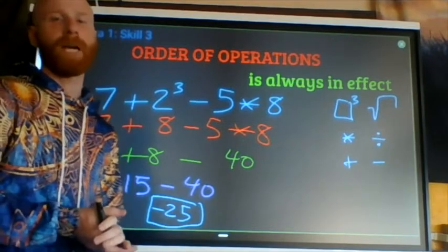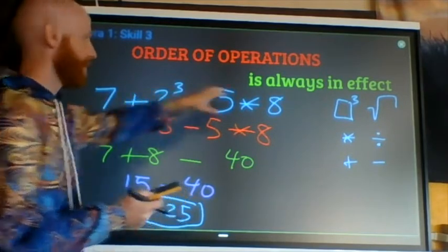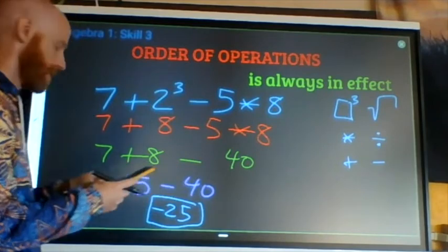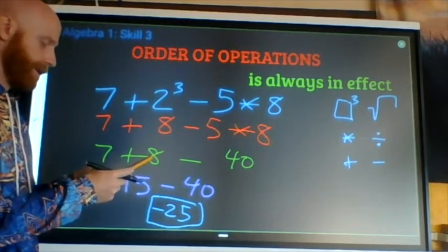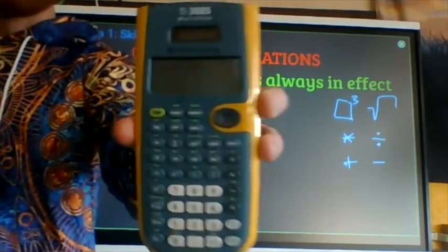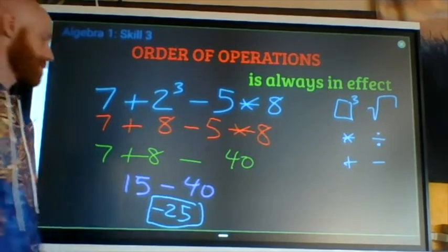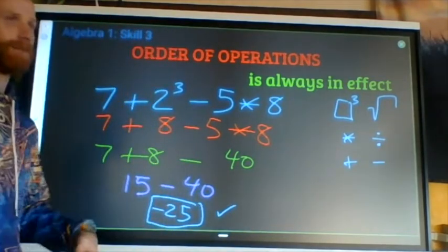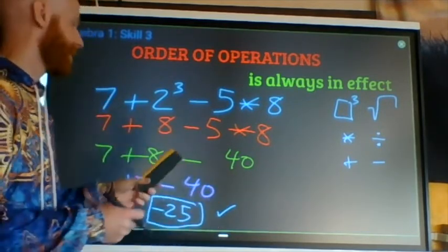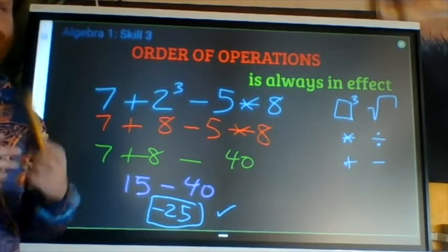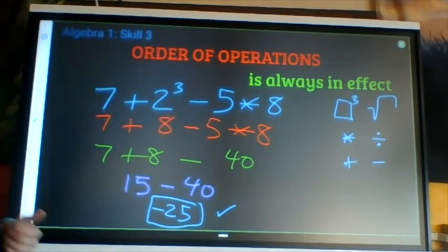Now, after you do all of those steps, if you want to check, am I correct? You can grab any kind of calculator that does its own order of operations and type the entire line in to double check. So seven plus two to the third minus five times eight. Enter. And I don't even know if you can see this, but negative 25 matches what I have there. Checked it. I usually put a check when I say I've checked something. And I move on to the next problem. Comfortable, confident that I did it right. If I had made a mistake, my calculator would tell me you made a mistake. And then I could look back through these lines and see if I could find the mistake where I went out of order.